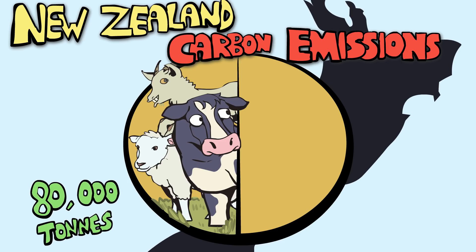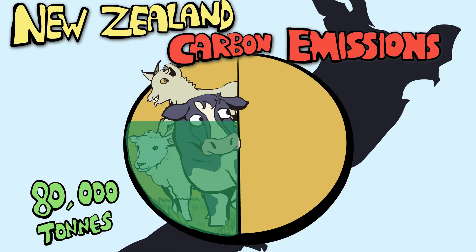New Zealand emits 80,000 tons of carbon each year, and 35% of them are from methane.